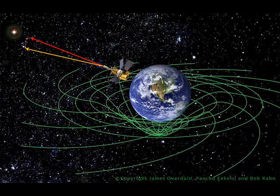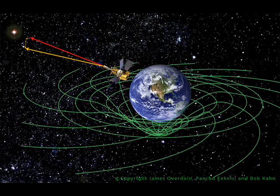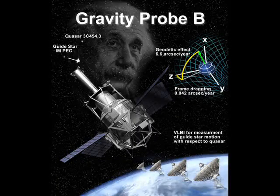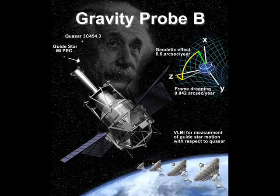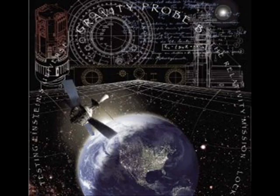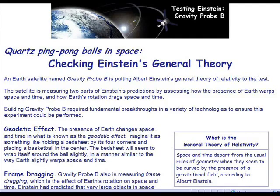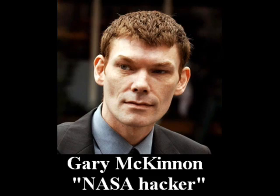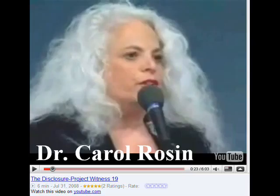NASA's Gravity Probe B will likely give us some clues once the results come back later this year. I recommend you go to nasa.gov and read up on Gravity Probe B, even though NASA is basically just a PR-friendly cover-up for the government's real space programs. They still have a lot of legitimate scientists working for them, and their research is still legit even though we all know what goes on inside Building 8 of the Kennedy Space Center, thanks to Disclosure Project Witness number 19.